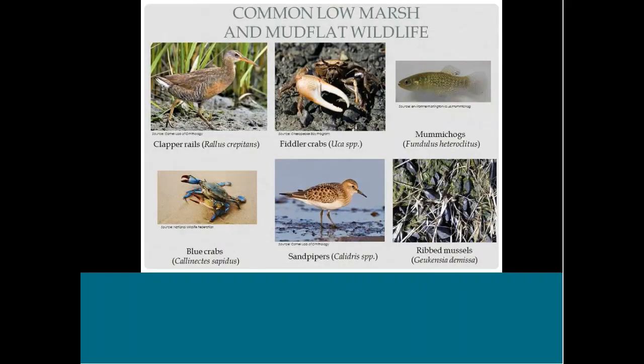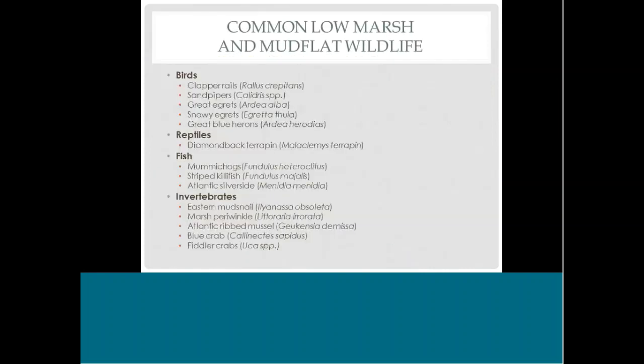Common low marsh and mudflat wildlife includes birds like clapper rails and sandpipers; invertebrates such as blue crabs, fiddler crabs, and ribbed mussels; and small estuarine fish like mummichogs. Other species include egrets, herons, diamondback terrapins, killifish, silversides, mudsnails, and marsh periwinkles.